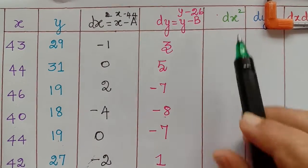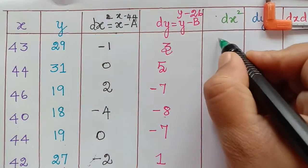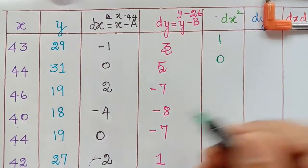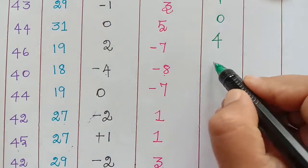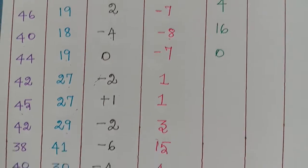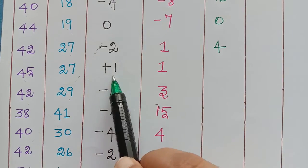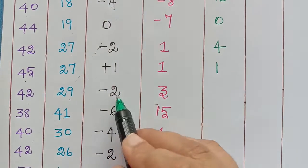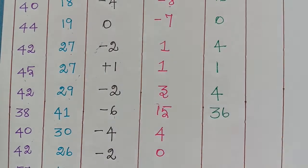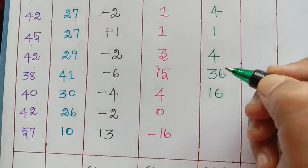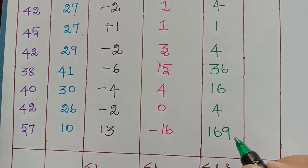After this we compute dx². We take the square of all values in the dx column. So: (−1)² = 1; 0² = 0; 2² = 4; (−4)² = 16; 0² = 0; (−2)² = 4; 1² = 1; (−2)² = 4; (−6)² = 36; (−4)² = 16; (−2)² = 4; and 13² = 169. Note that negative numbers become positive when squared.